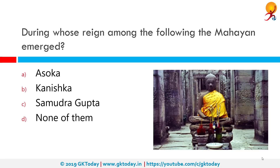During whose reign among the following did the Mahayana branch of Buddhism emerge? The correct answer is Kanishka. During Kanishka's reign, he regarded Mahayana as a state religion. The state religion of Kanishka determined preaching the divinity of Gautam Buddha.